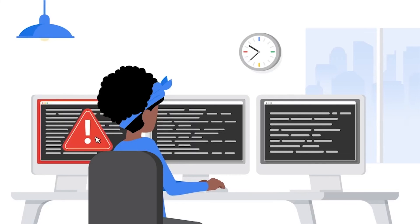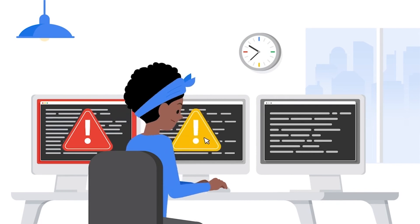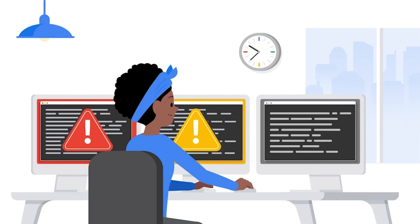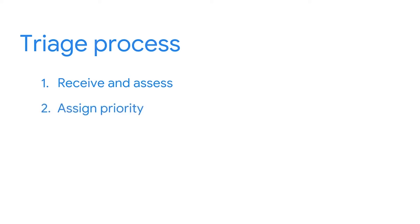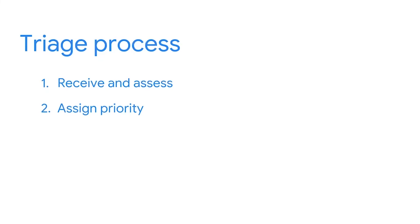When does triage happen? Once an incident is detected and an alert gets sent out, triage begins. As a security analyst, you'll identify the different types of alerts and then prioritize them according to urgency. First, you'll receive and assess the alert to determine if it's a false positive and whether it's related to an existing incident. If it's a true positive, you'll assign priority based on the organization's policy and guidelines. The priority level defines how the security team will respond to the incident. Finally, you'll investigate the alert and collect and analyze any evidence associated with the alert, such as system logs.